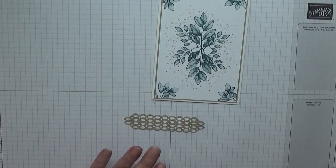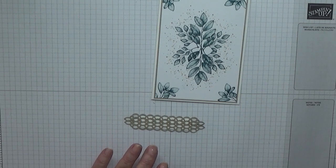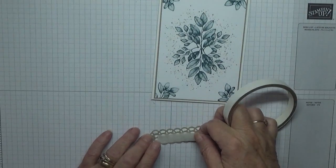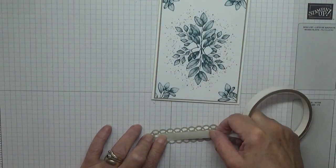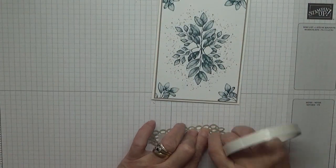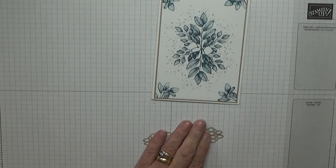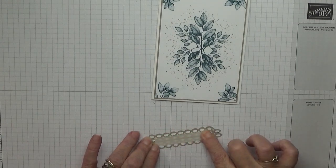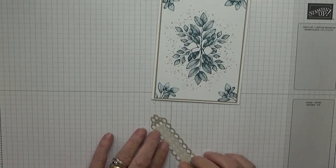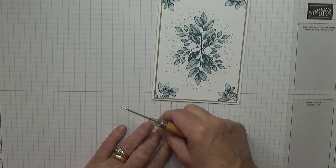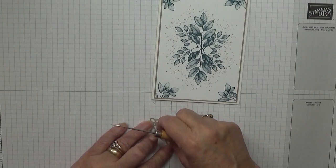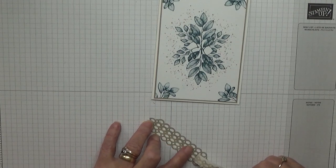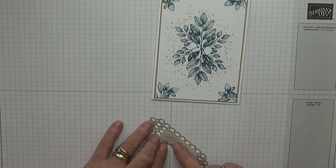Then I've got a bit of double-sided tape, not a lot, just enough to cover the back of the sentiment. Push it right down and then peel the backing off.